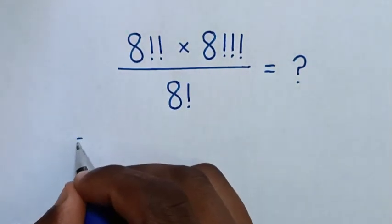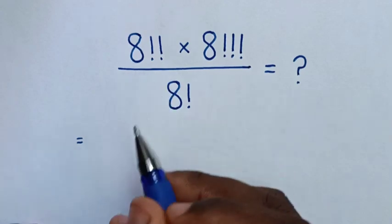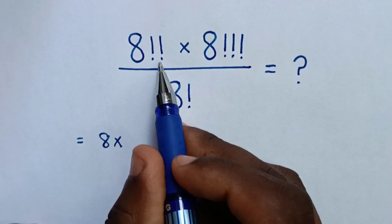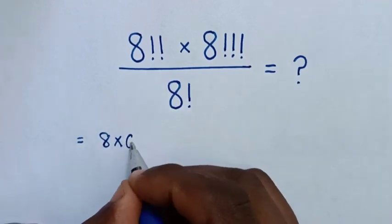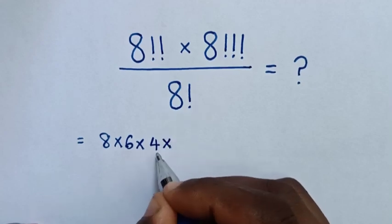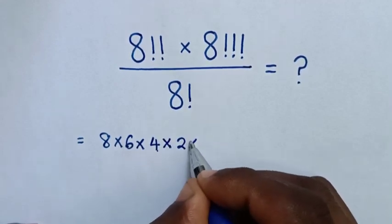So, it will be equal to, from here 8 double factorial is same as 8 times, because in here is double factorial it will be 8 minus 2 is 6 times, 6 minus 2 is 4 times, 4 minus 2 is 2 times 1.